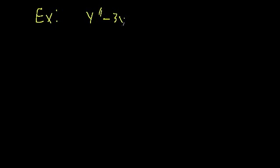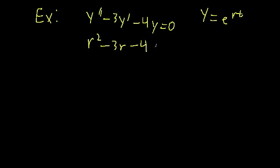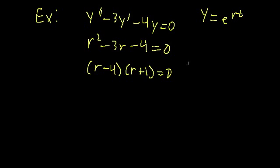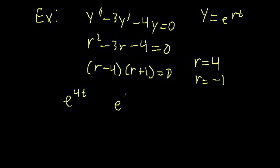Let's start with an example. Suppose we have the differential equation y'' minus 3y' minus 4y equals zero. We try the solution y equals e to the rt, and skipping a couple of steps, we go straight to the characteristic equation: r² minus 3r minus 4 equals zero. We can factor this as (r minus 4)(r plus 1) equals zero, giving us two roots: r equals 4 and r equals negative 1. This means our two solutions are e to the 4t and e to the negative t.